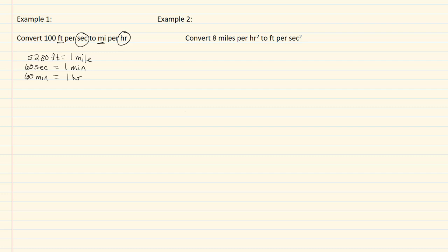Now that I have all my conversions laid out, I'll start with what we were given: one hundred feet per second, written as one hundred feet over one second. I'm going to convert feet first. Since feet is in the numerator, I put feet in the denominator of my conversion factor, and the mile goes on top. Feet cancels out, leaving me with miles, which is what we want. I can cross that conversion off.